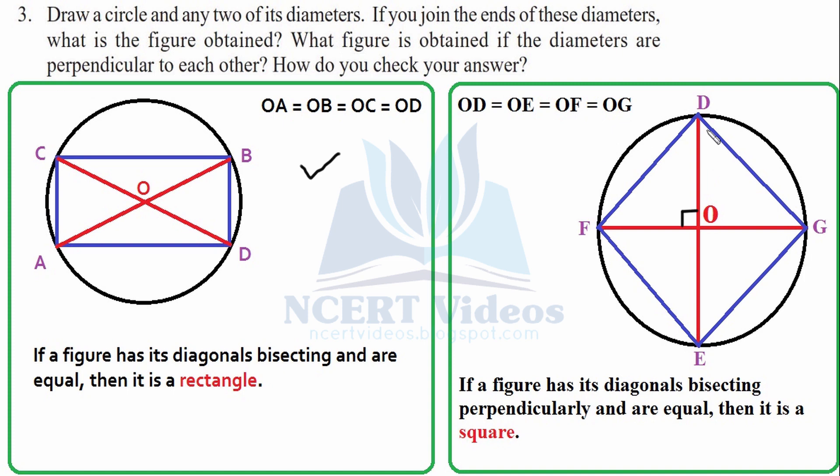Now, another figure is having perpendicular diameters. Perpendicular means they are cutting each other at 90 degrees. And again, OD, OE, OF and OG are all radius of the circles. They are all equal. A figure which has diagonals bisecting perpendicularly—remember, perpendicular is the only difference here—and if the other sides are equal, then it is called a square. This is the basic difference between square and a rectangle. In square, a bisection happens perpendicularly. Whereas in rectangle, it doesn't happen. You can also check with the help of ruler that the distances of its sides are equal. Therefore, you can say that it is a square.